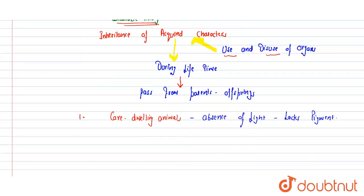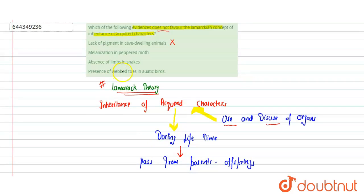Next is melanization in the peppered moth. This is an example of natural selection. The peppered moth adapted itself to its surrounding environment to escape from predators. Living in industrial areas, they developed melanin pigment in their body. This is an example of natural selection, not Lamarck's theory. This option does NOT favor Lamarck's theory — there is no use and disuse of organs here — so this is the correct answer.